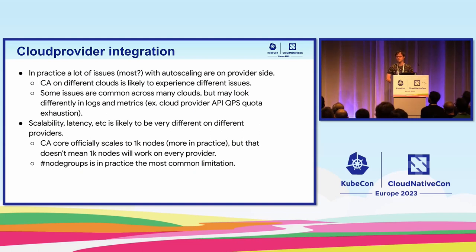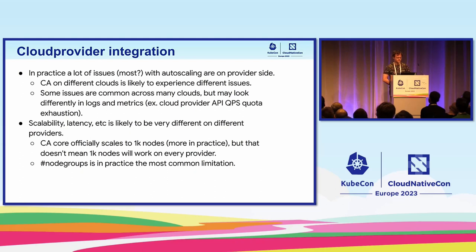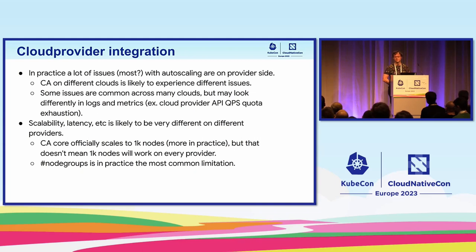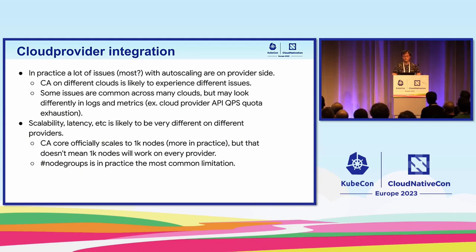One example is API QPS quota exhaustion, which is a very common problem for Cluster Autoscaler. The challenge is that those quotas look different across clouds, and based on how much caching a given cloud provider integration is doing in Cluster Autoscaler, it's going to be a different cluster size or number of node groups that really triggers those issues. I don't think there is one good way to monitor it inside Cluster Autoscaler, but I would recommend monitoring it on your cloud provider side as much as possible.